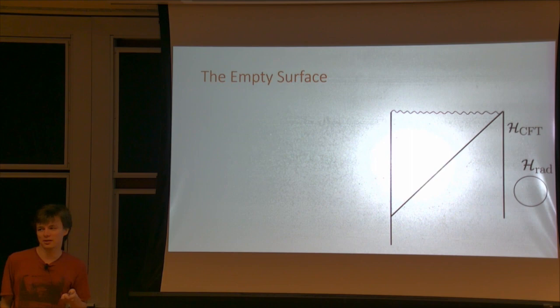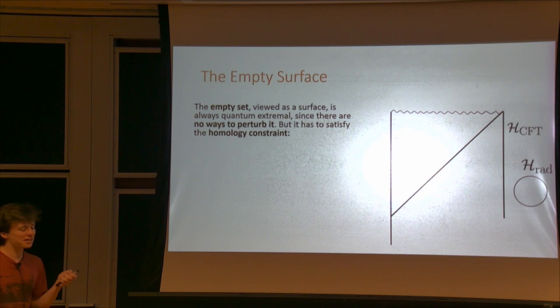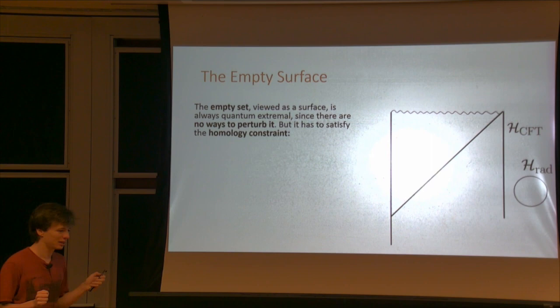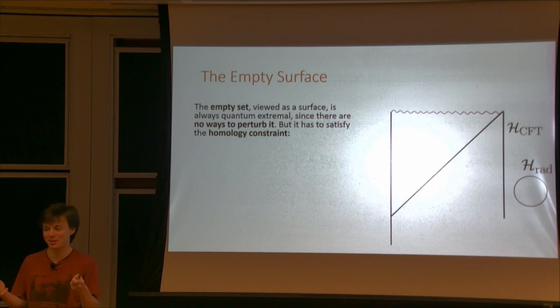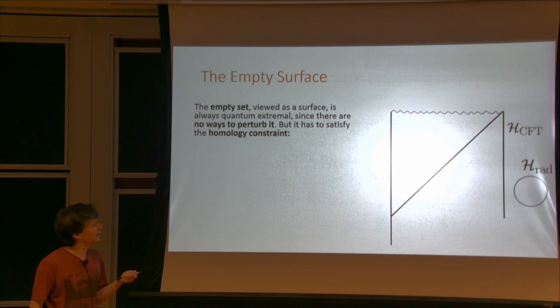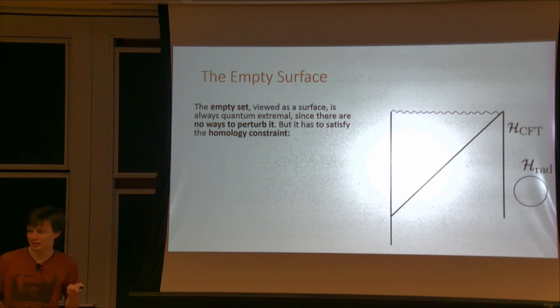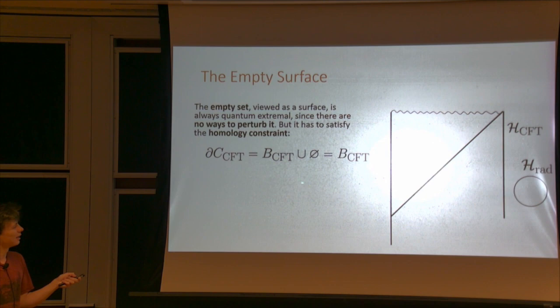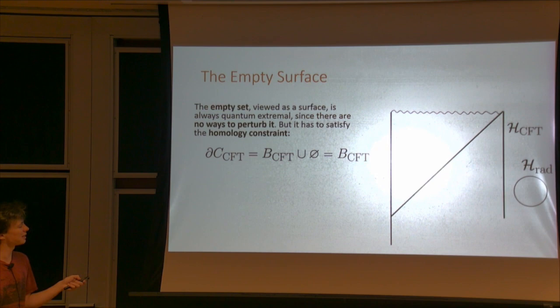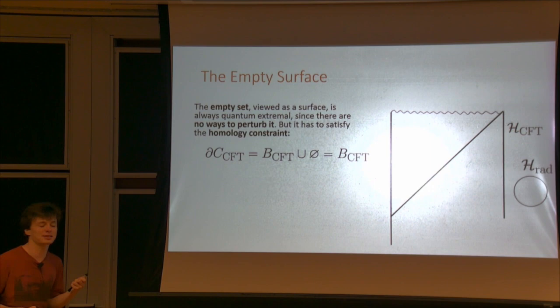There's one quantum extremal surface for the evaporating one-sided black hole that is very trivial — it's literally the surface whose set of points is empty. This surface is always quantum extremal by definition, because there's no way to perturb it. Normally it's not something we ever think about, because you have to consider surfaces that satisfy the homology constraint and almost always we consider boundary regions with non-trivial homology, so this surface is just disallowed. But in this case, the boundary of the CFT has trivial homology — I can find a spacelike slice that goes all the way to the origin, and the boundary of that slice is just the boundary of the CFT and nothing else. So the empty set does satisfy the homology constraint.